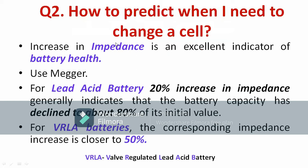The next question: how do you predict when you need to change a cell — what parameters do you need to monitor? If provided with a battery, how can you predict its remaining life? There is a key parameter: impedance. You need to measure the impedance using a megger, which is a device used for measurement of insulation resistance.